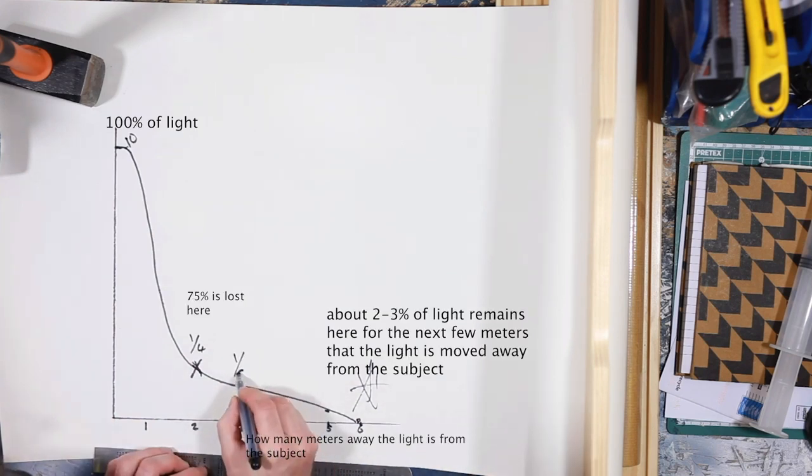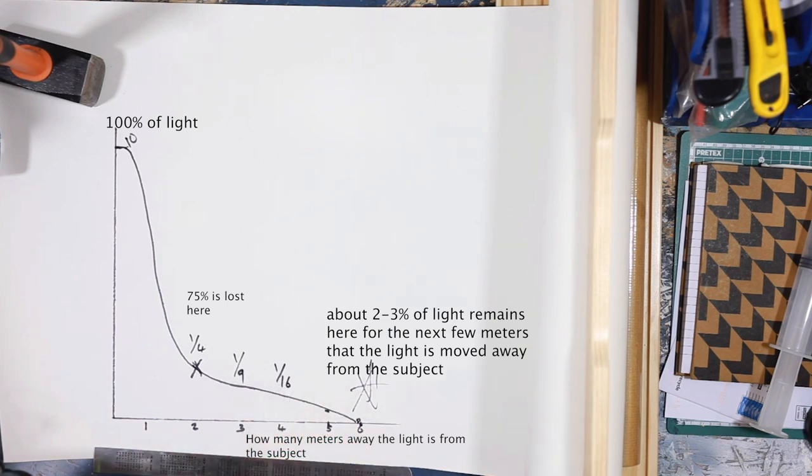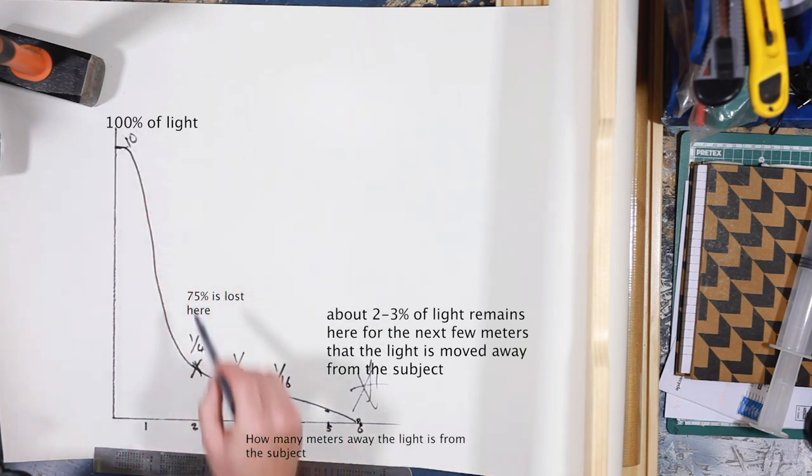There's another way to go about this — we can also add a reflector to bounce the light back in. It gets mathematically complicated, but generally I do it by eye. I pop something in and if it bounces enough light, we're good. If it's too much light, we bring it further back, or closer in if there's not enough bounce. That's basically the gist of it.